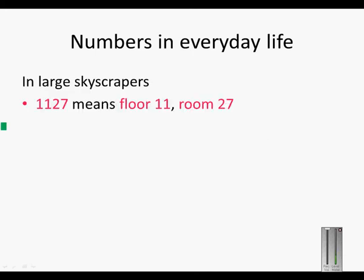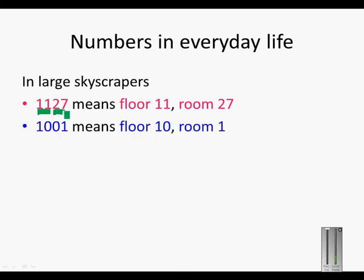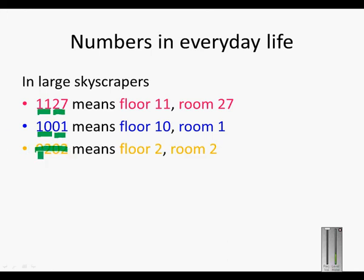In large skyscrapers, if you see the number 1127, it means floor 11, room 27. If you see 1001, it means floor 10, room 1. If we have a lower ground floor, like 0202, it means floor 2, room 2.